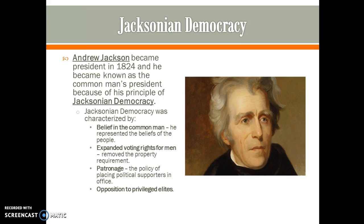Andrew Jackson became president in 1824 and quickly became known as the common man's president because of his principle of Jacksonian democracy. Jacksonian democracy was characterized by the belief in the common man — he really represented the beliefs of the people. Jackson is famous for throwing a huge party at the White House and inviting all the people. He also expanded voting rights for men by removing the property requirement, which had previously kept poor farmers from voting. He also started the system of patronage, also known as the spoils system, placing political supporters into office. He had a strong opposition to privileged elites, believing they should have no more right to government than the common man.